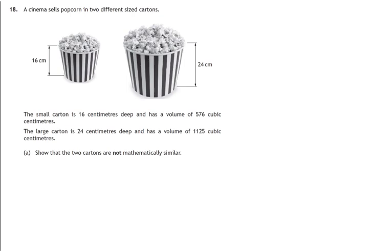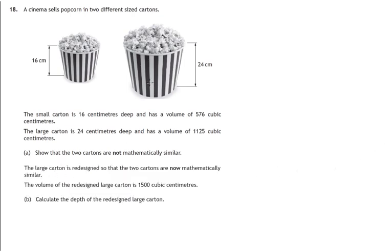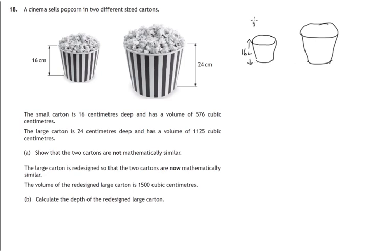Now let's look at part B of the question. We're told that the large carton has been redesigned and its volume is now 1,500 cubic centimeters. The crucial thing is that the large carton is now mathematically similar to the small carton. The small carton hasn't changed — it has a height of 16 centimeters and a volume of 576 cubic centimeters. For the redesigned carton, we have no idea what the depth is — that's what we have to calculate.